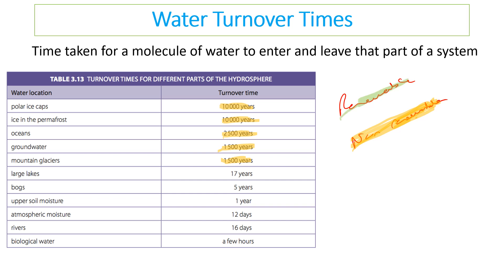To be renewable, water needs to replenish faster than we actually use it, so it can balance the amount we're consuming. Rivers can be classed as renewable, biological water can be classed as that, and atmospheric moisture can be classed as renewable since it rains regularly. Depending on how much you use, you could potentially argue that some groundwater sources are renewable as well. So water can be either non-renewable — taking so long to replenish it won't do so within our lifetime — or renewable, meaning it is self-replenished by the atmosphere.